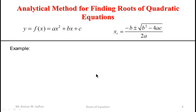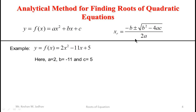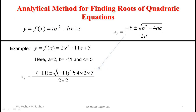Let us consider the example y equal to f of x equal to 2x squared minus 11x plus 5. Comparing, a equals 2, b equals minus 11, and c equals 5. Using the formula, xr equals minus of (minus 11) plus or minus square root of (minus 11 squared minus 4 into 2 into 5) divided by 2 into 2.